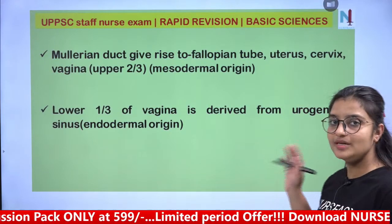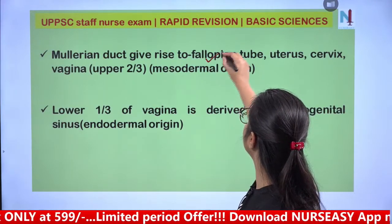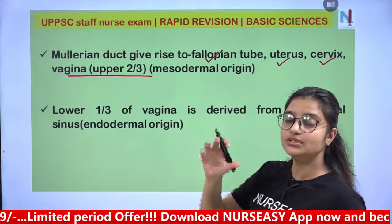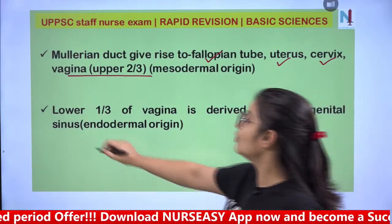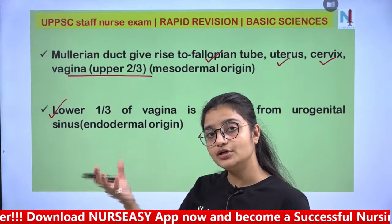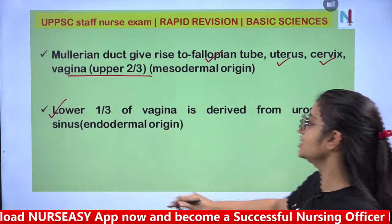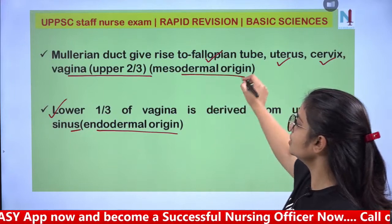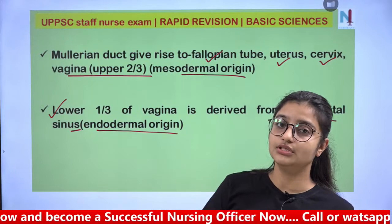Mullerian duct gives rise to fallopian tube, uterus, cervix, and the upper two-thirds of the vagina. The lower one-third of the vagina is developed from the urogenital sinus, which is endodermal in origin, while the Mullerian duct is mesodermal. If a question asks about upper two-thirds of vagina, the answer is Mullerian duct.